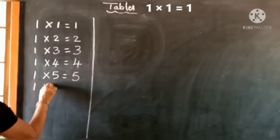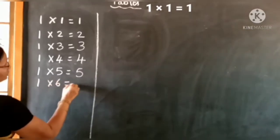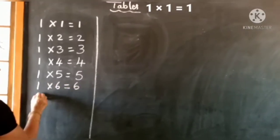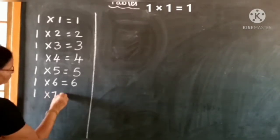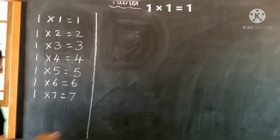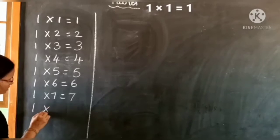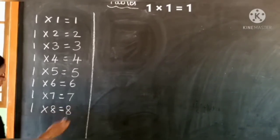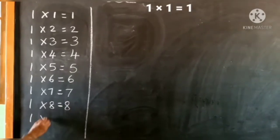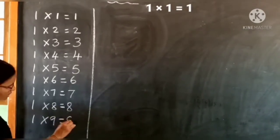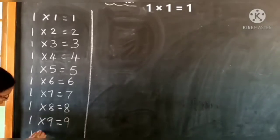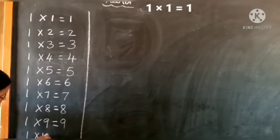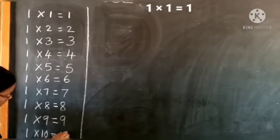One sixes are six, one sevens are seven, one eights are eight, one nines are nine, one tens are ten.